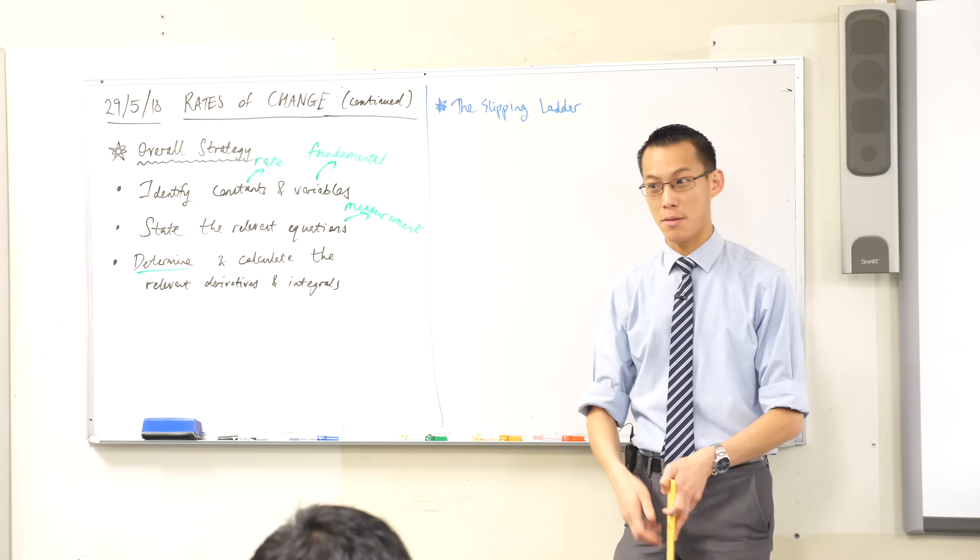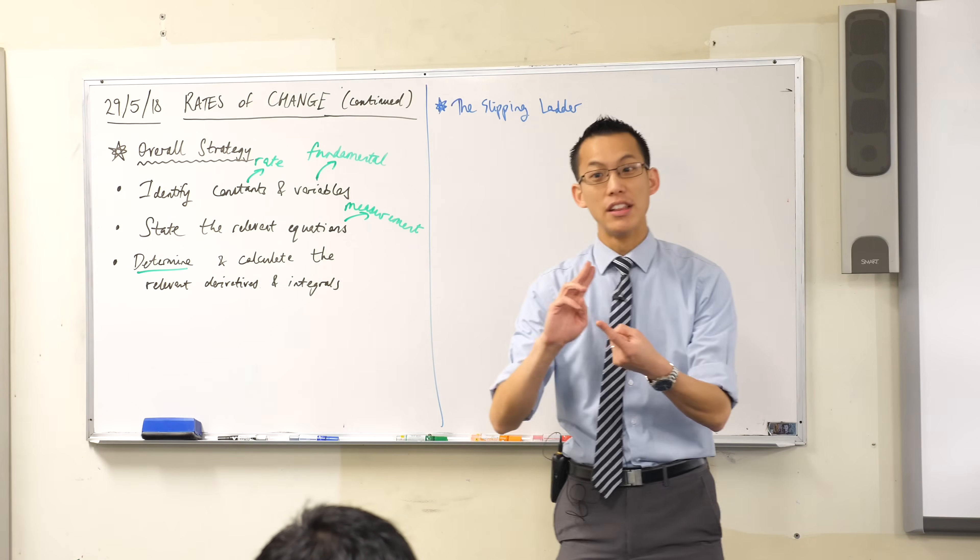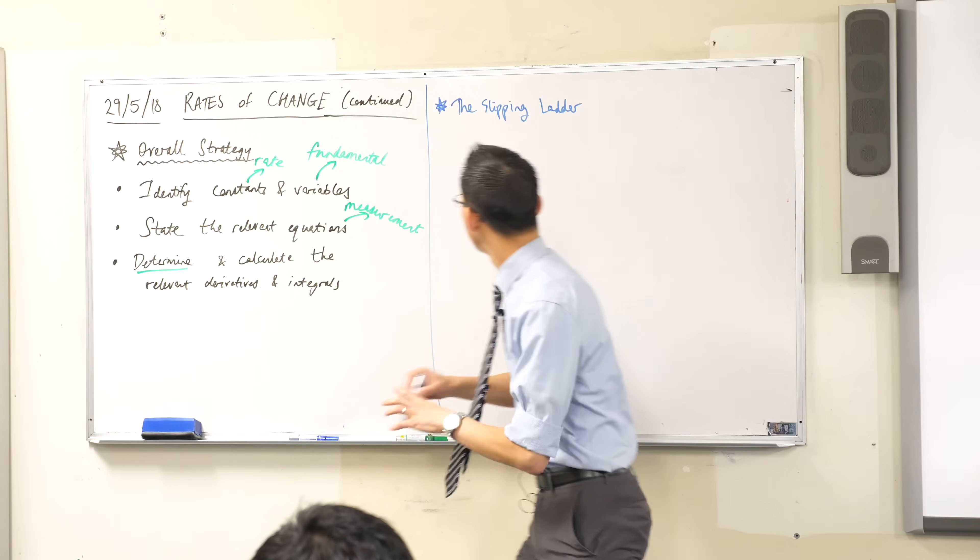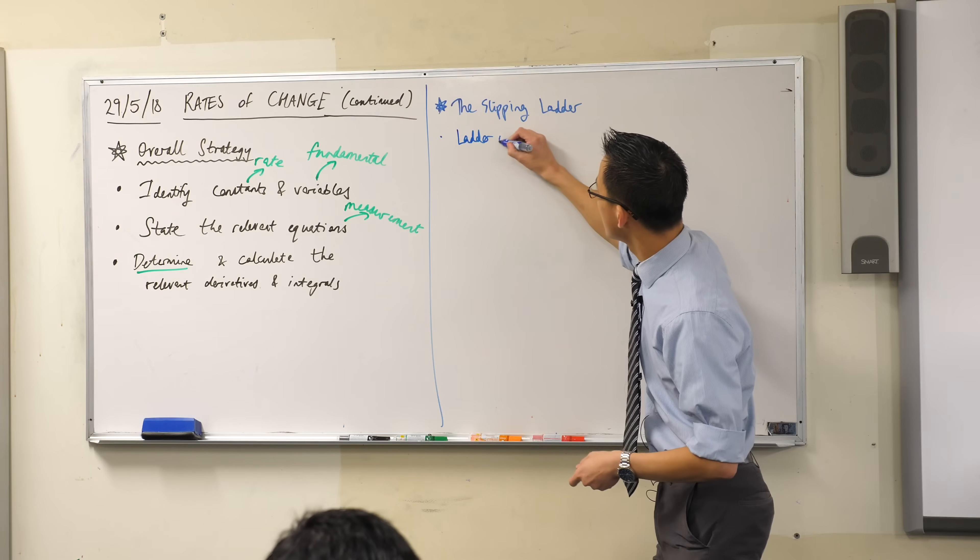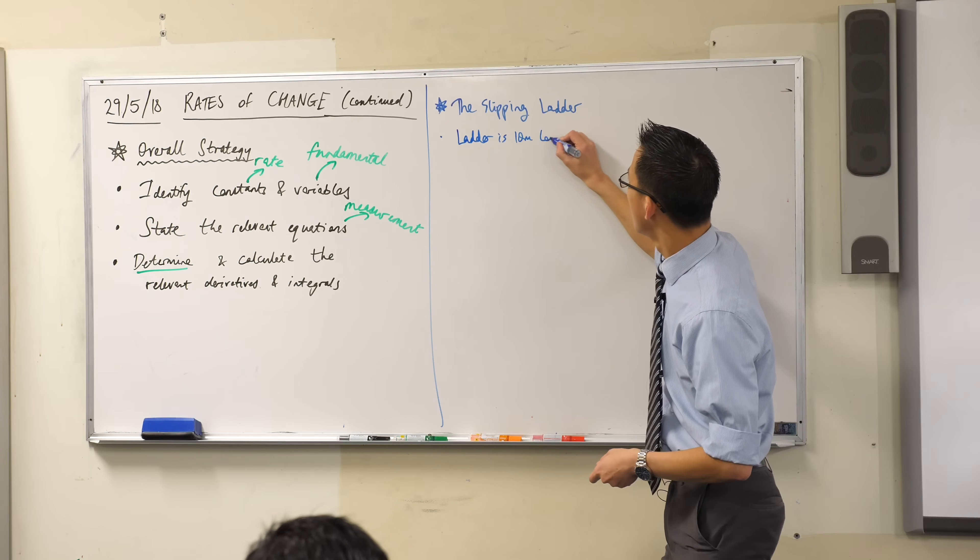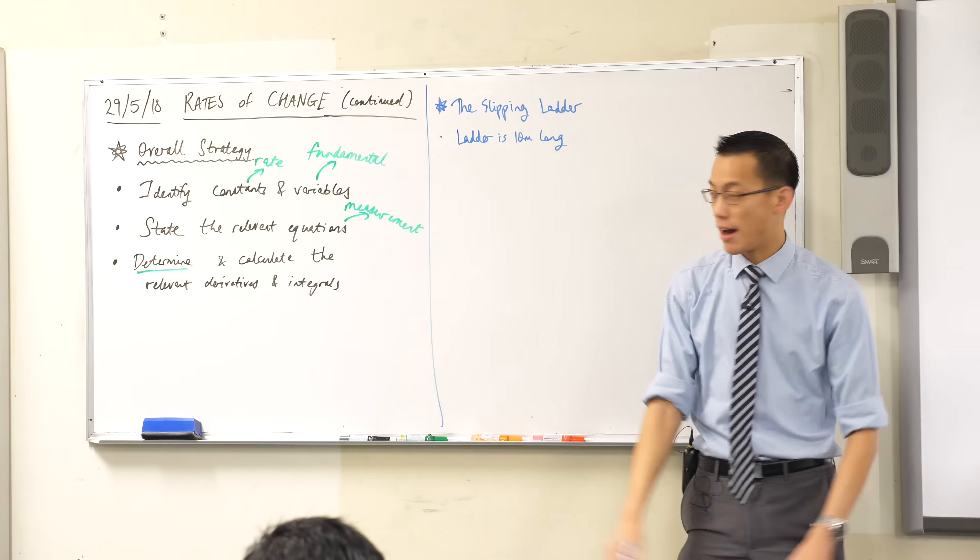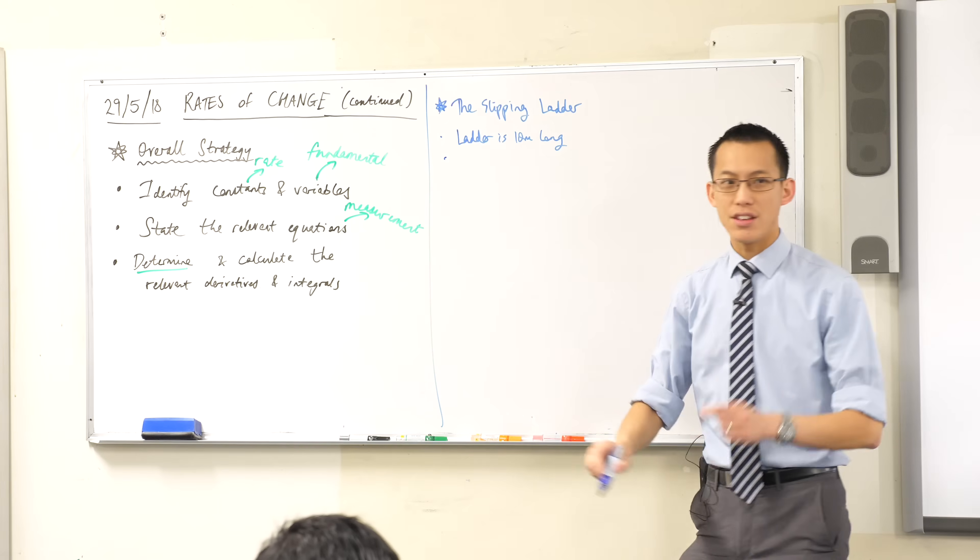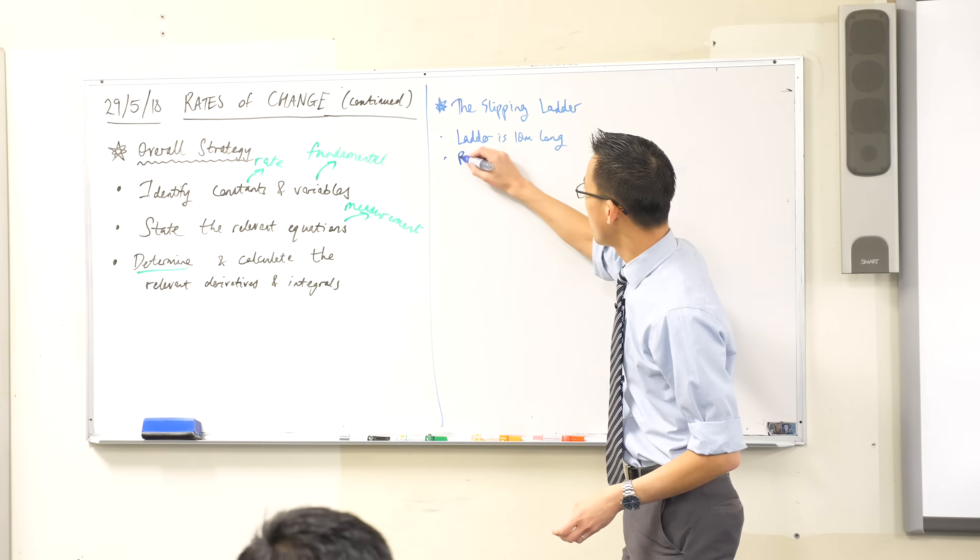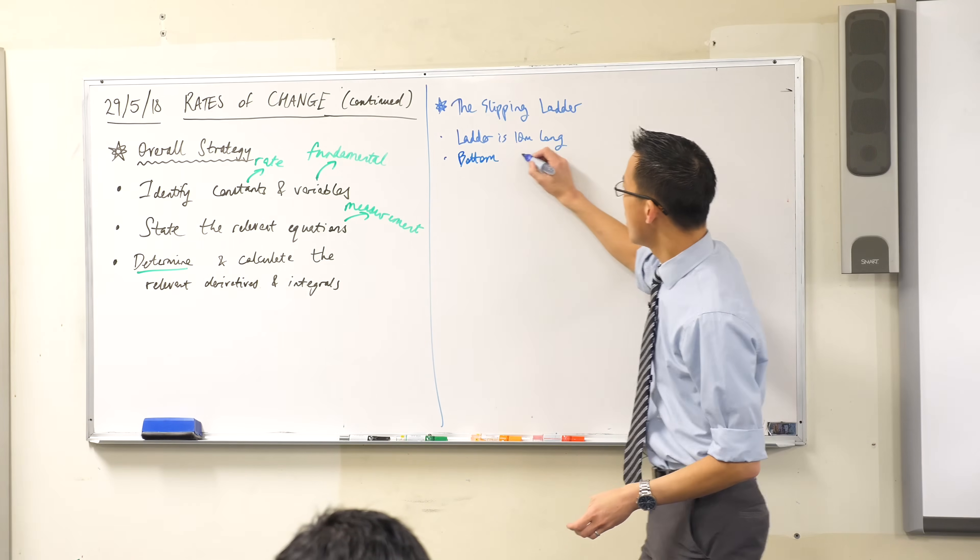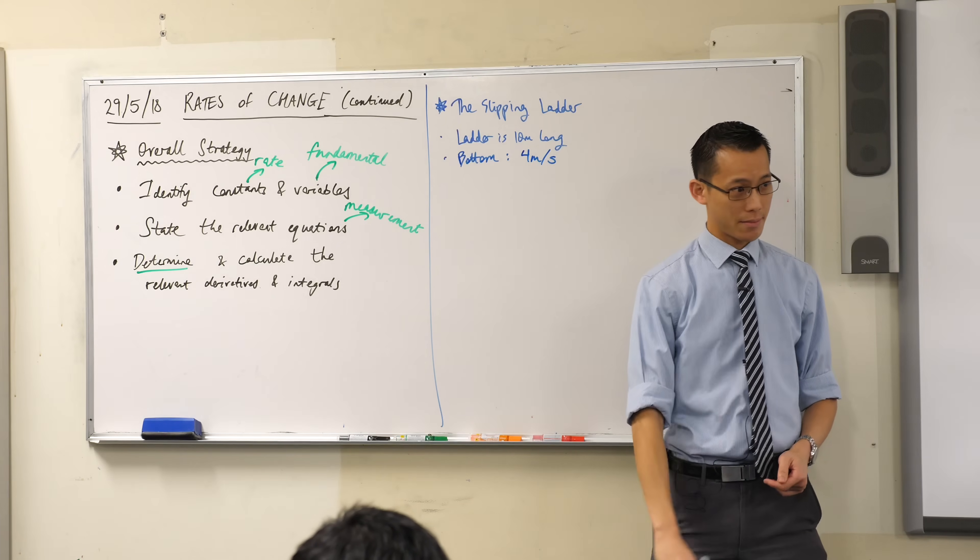So now I'm going to ask you to pick up your pen again and let's work out what the important things are here. Now, the ladder is 10 meters long, so let me say that. Wrong color. The ladder is 10 meters long. The bottom of the ladder, the part that's sliding on the ground, is sliding at, I think the speed I said was 4 meters per second. So the bottom is moving at 4 meters per second.